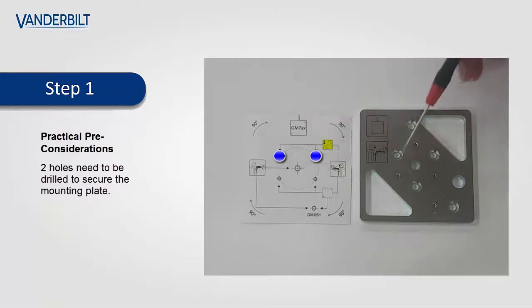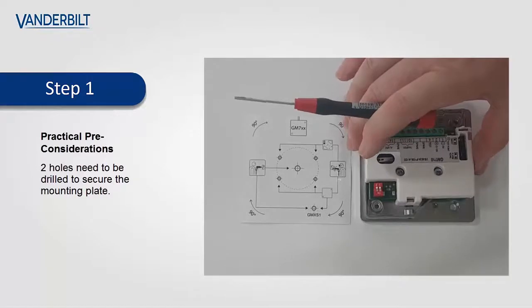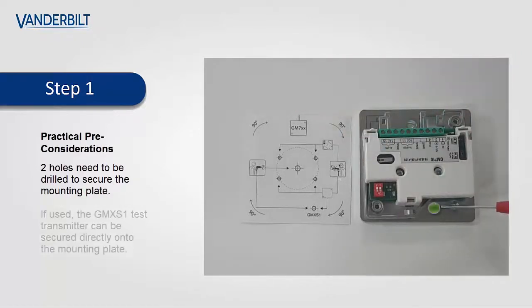Once these are being drilled, the mounting plates are secured by these two holes here, then these two holes here secure the detector to the plate, and this hole here secures the GMX-S1 test transmitter.